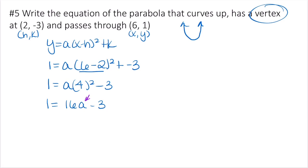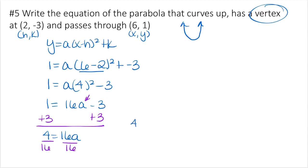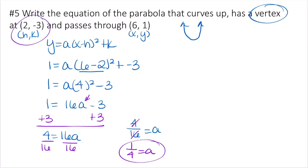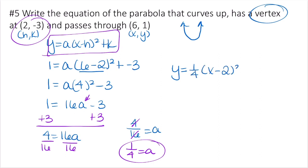Adding 3 to both sides gives 4 equals 16a. Dividing both sides by 16 gives a equals 4 over 16, which reduces to 1 over 4. Now plugging a, h, and k back into vertex form, the equation of the parabola is y equals one-fourth times x minus 2 squared minus 3.